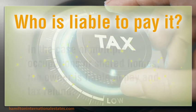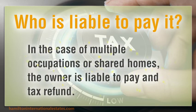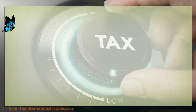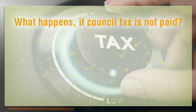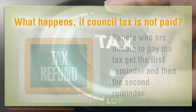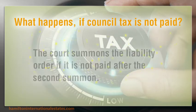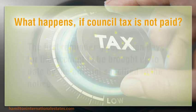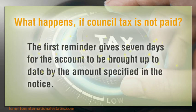In the case of multiple occupations or shared homes, the owner is liable to pay the tax. What happens if council tax is not paid? People who are unable to pay the tax get a first reminder and then a second reminder. The court summons a liability order if it is not paid after the second summons. The first reminder gives seven days for the account to be brought up to date by the amount specified in the notice.